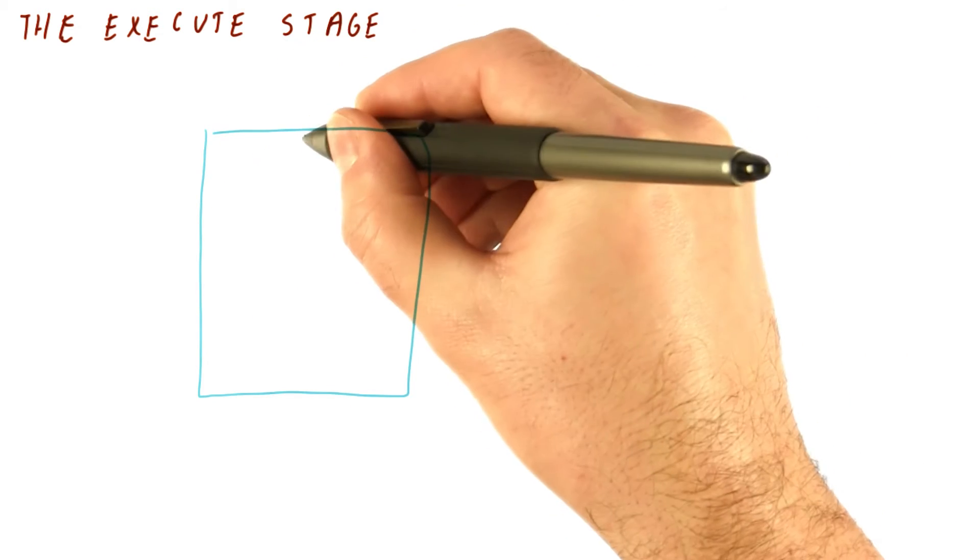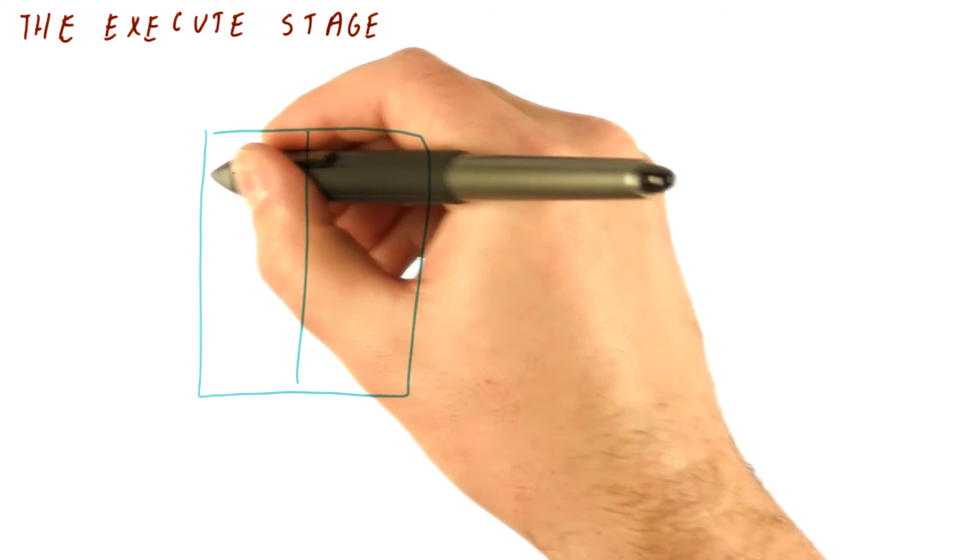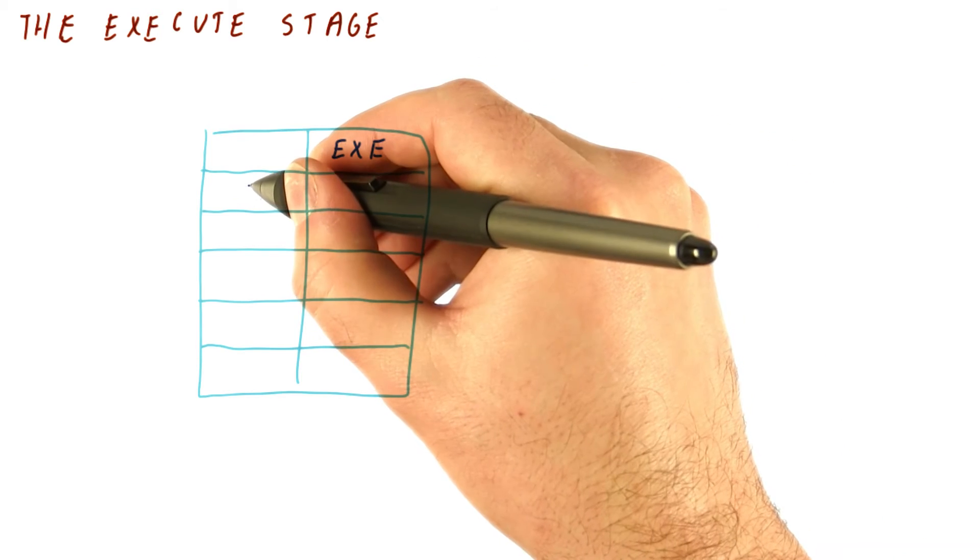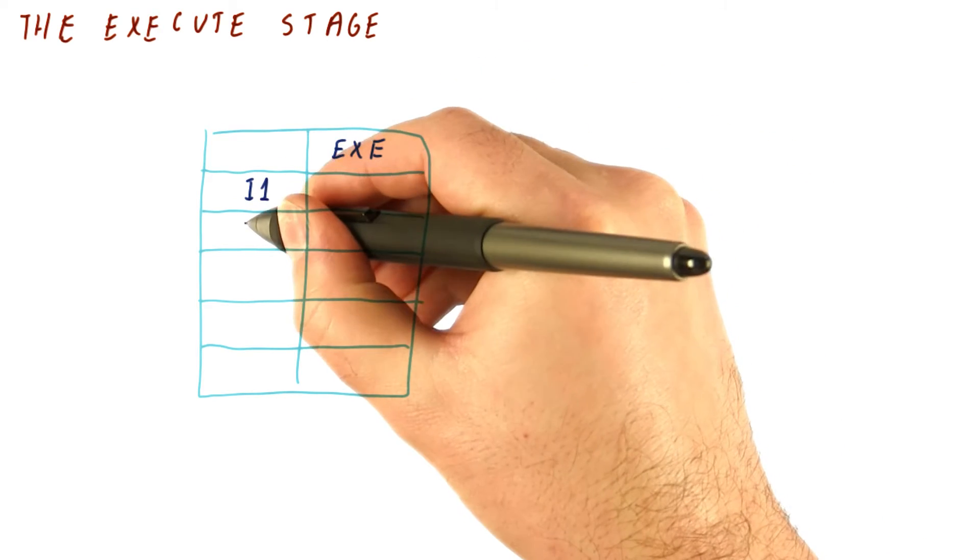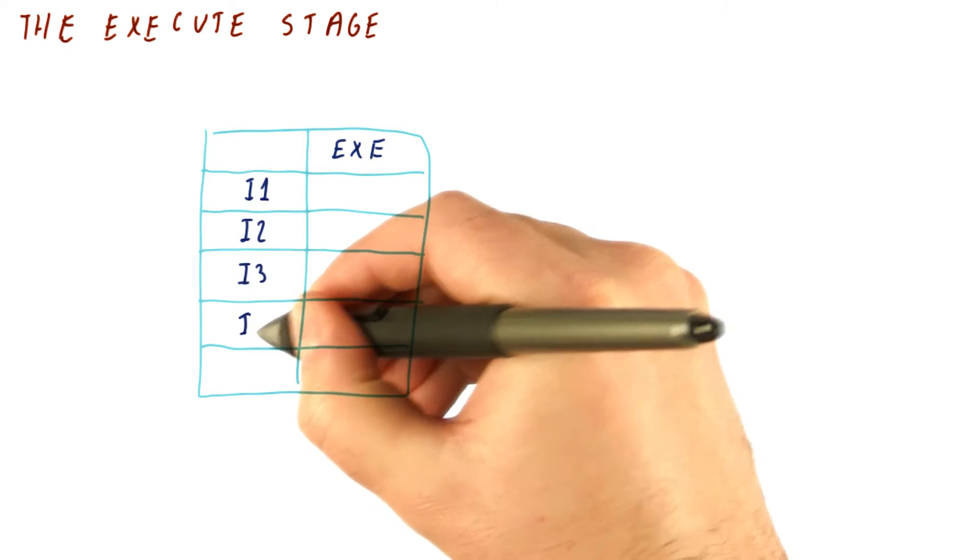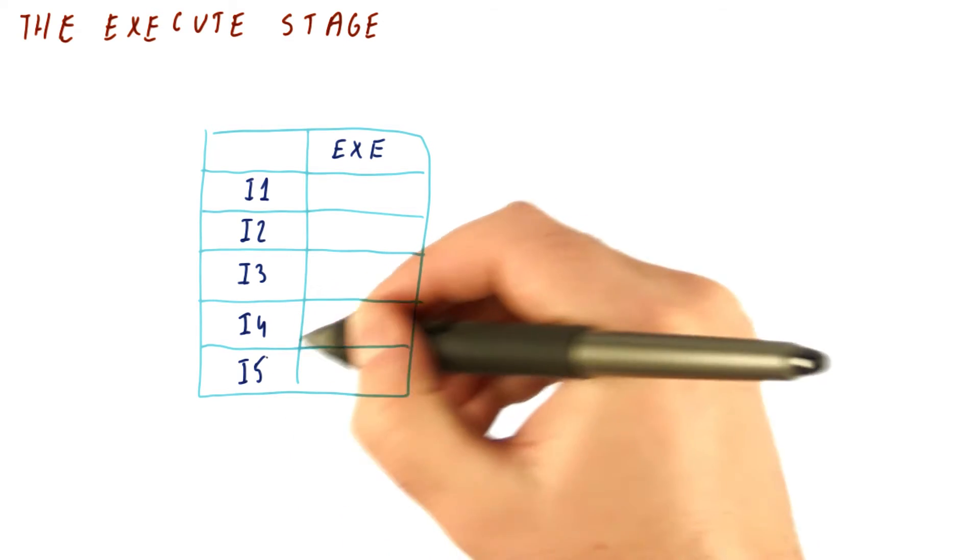If you remember, we had our instructions and now we are just going to look at the execute stage. We're going to have our instructions be i1, i2, i3, i4, and i5.